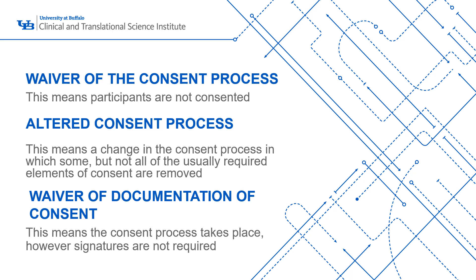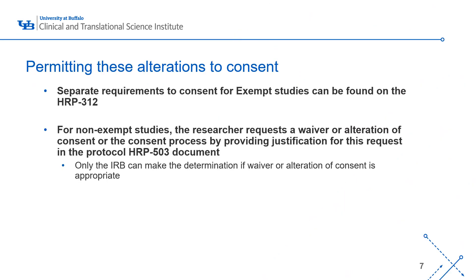An altered consent process means that consent is obtained; however, there is a change in the process in which some, but not all, of the usually required elements of consent are removed. A waiver of documentation of consent means that the participant is consented during the consent process; however, a signature is not required. If your research study is exempt, there are separate requirements found on the HRP 312 exempt worksheet, which are much shorter and less intensive than for expedited or greater than minimal risk studies.